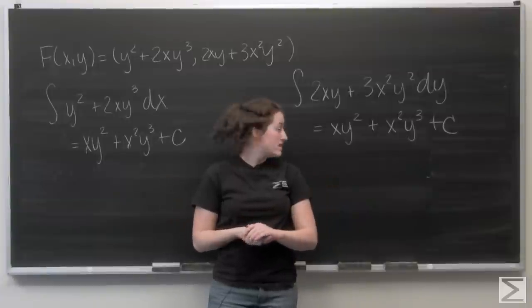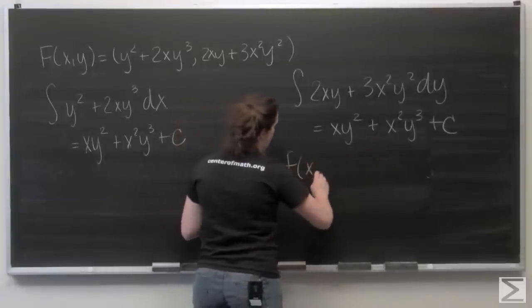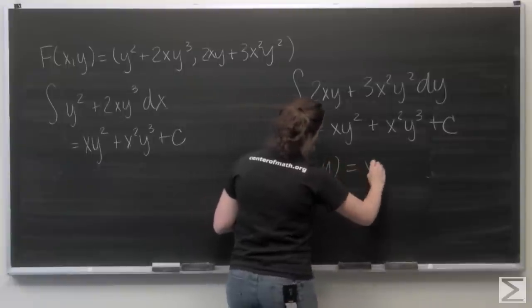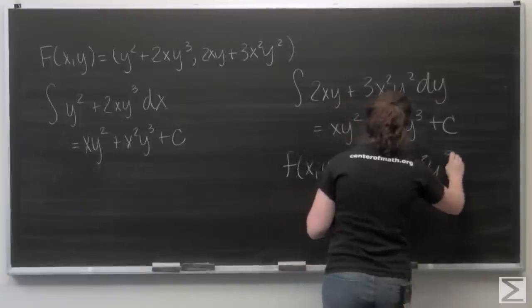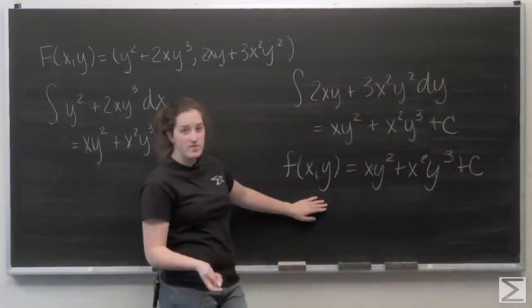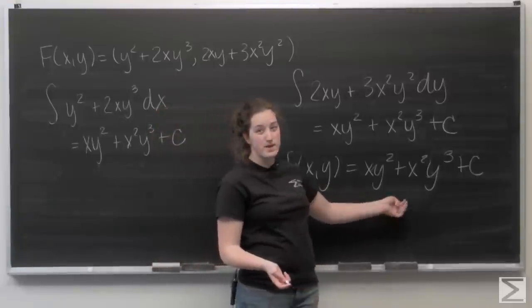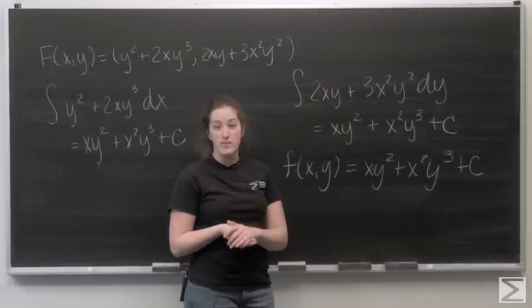So I can write this as my potential function. My potential function is f of x, y equals xy squared plus x squared y cubed plus some constant c, where c is just any real number.